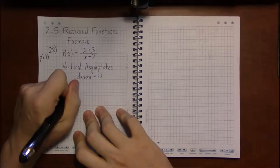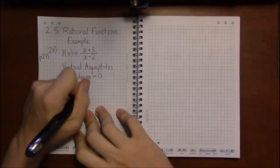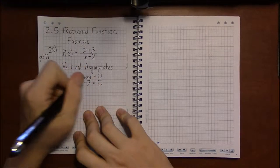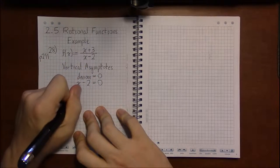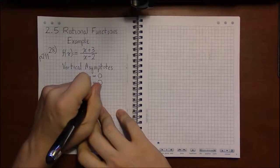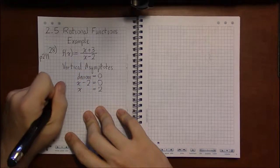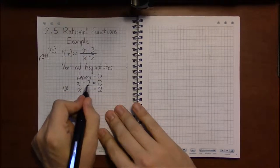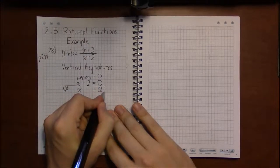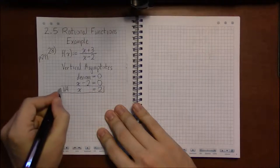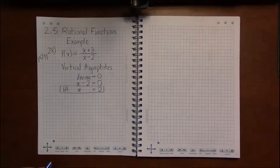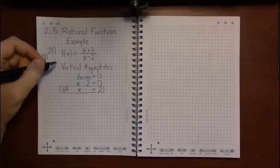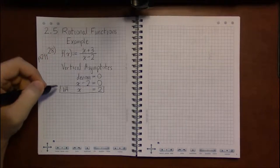So we set the denominator, x minus 2, equal to zero, and solve. Add 2 to both sides, and we see that the vertical asymptote for this function is the line x equals 2. And that's all there is to this, just taking this kind of one piece at a time.